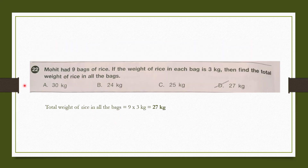Question number 22: Mohit had 9 bags of rice. If the weight of rice in each bag is 3 kg, find the total weight of rice in all the bags. One bag has 3 kg, so 9 bags will have 9 times 3 kg, which is 27 kg. Total weight of rice in all the bags is 27 kg, which is option D.